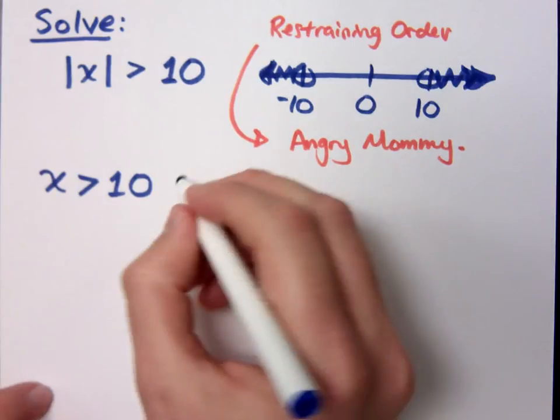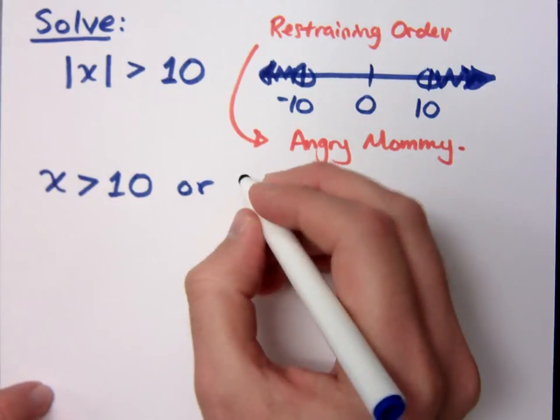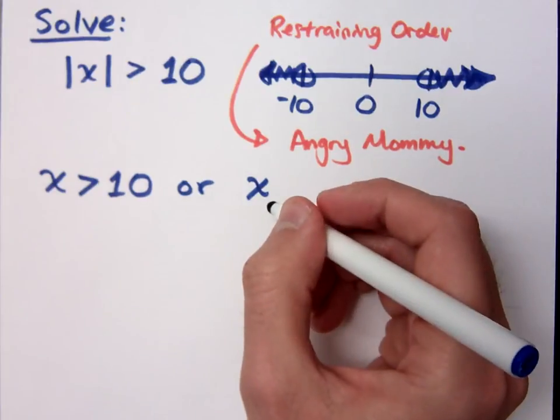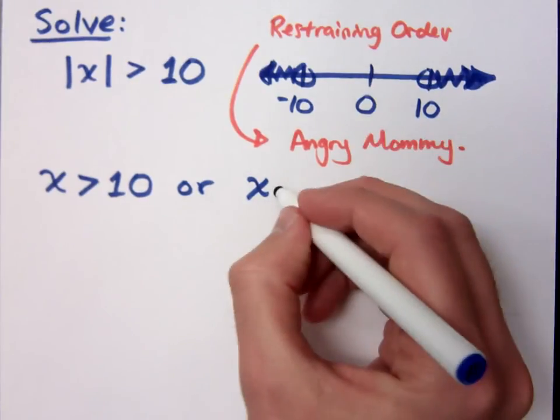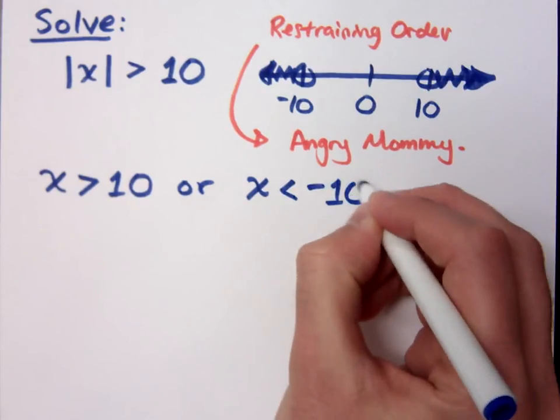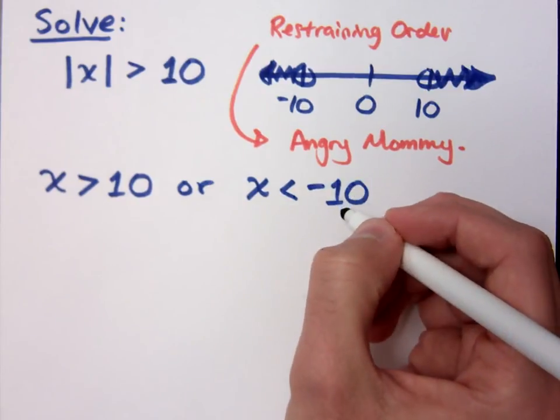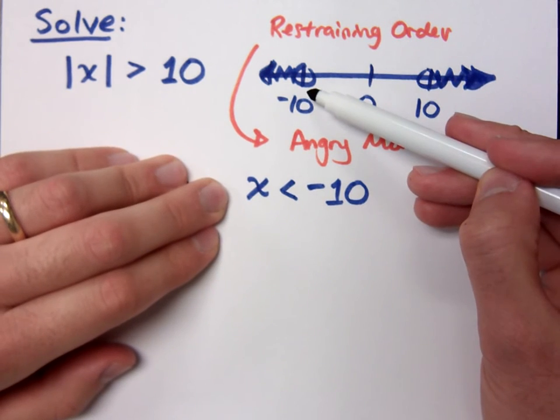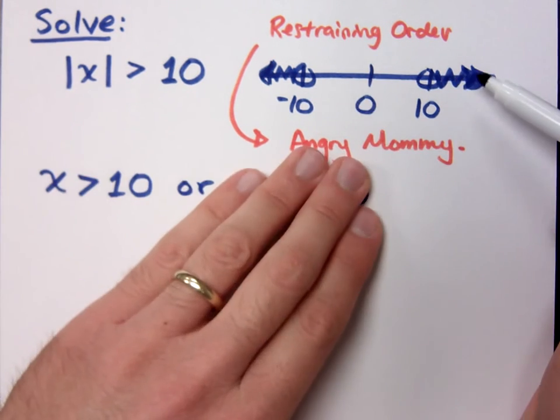So it means x is greater than 10. Or, what was the other part? Greater than negative 10? It's not greater than negative 10. Look at your inequality up here. It's less than negative 10. You flip the inequality. Oh yeah, okay. And you change the sign. Doesn't this match up with x is less than negative 10? And the other part is x is greater than 10?